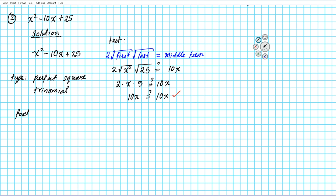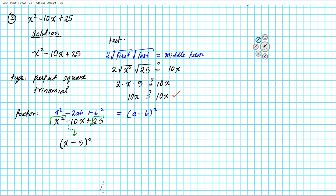So next we're going to go ahead and factor it. The beauty of a perfect square trinomial is you can use a shortcut — you don't need to use the x-game to factor. You have a perfect square trinomial of the form a² - 2ab + b²; the factored state is simply (a - b)². All you do is take the square root of the first term and the last term and bring down the middle sign. The square root of x² is x, and the square root of 25 is 5, so the factored form is (x - 5)².